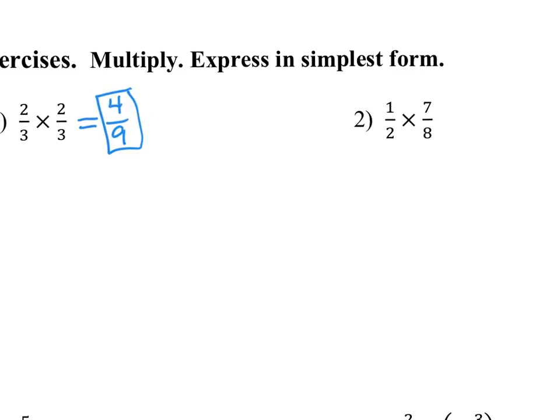Now, number two. 1 times 7 is 7. 2 times 8 is... 16. Seven sixteenths. We can't simplify any more than that.